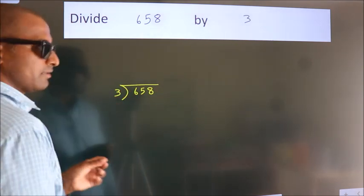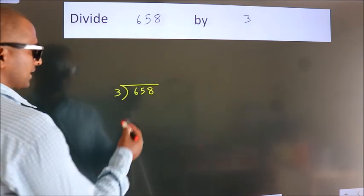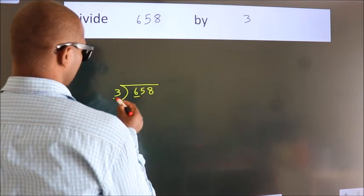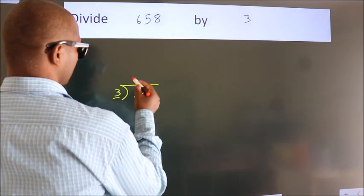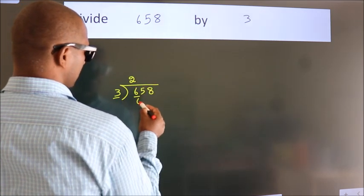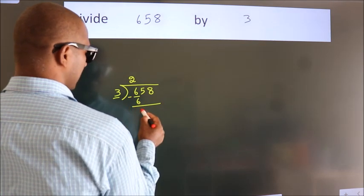This is step 1. Next, here we have 6, here 3. When do we get 6? In 3 table, 3 2's, 6. Now we subtract, we get 0.